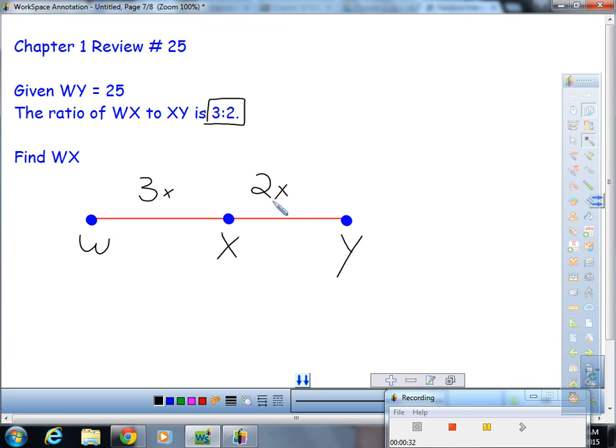Meaning three times some number and two times that same number will give us the ratio we want. Now we can set up an equation because we know that WY is the sum of WX and XY.